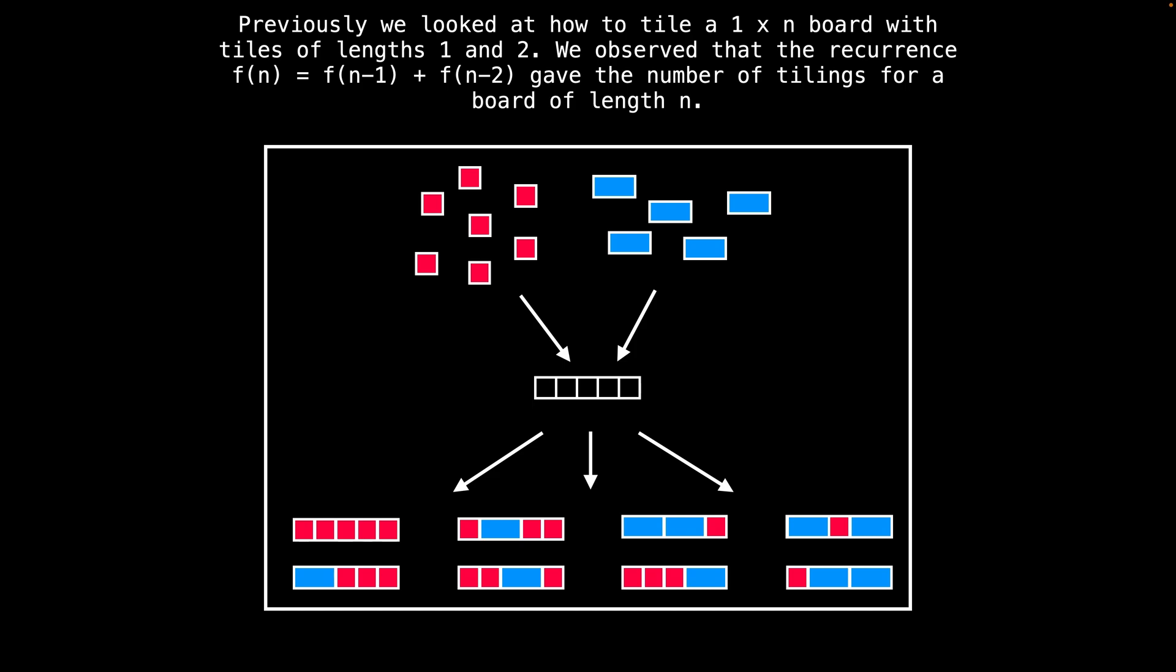Previously, we looked at how to tile a one by n board with tiles of lengths one and two. We observed that the recurrence f(n) = f(n-1) + f(n-2) gave the number of tilings for a board of length n.